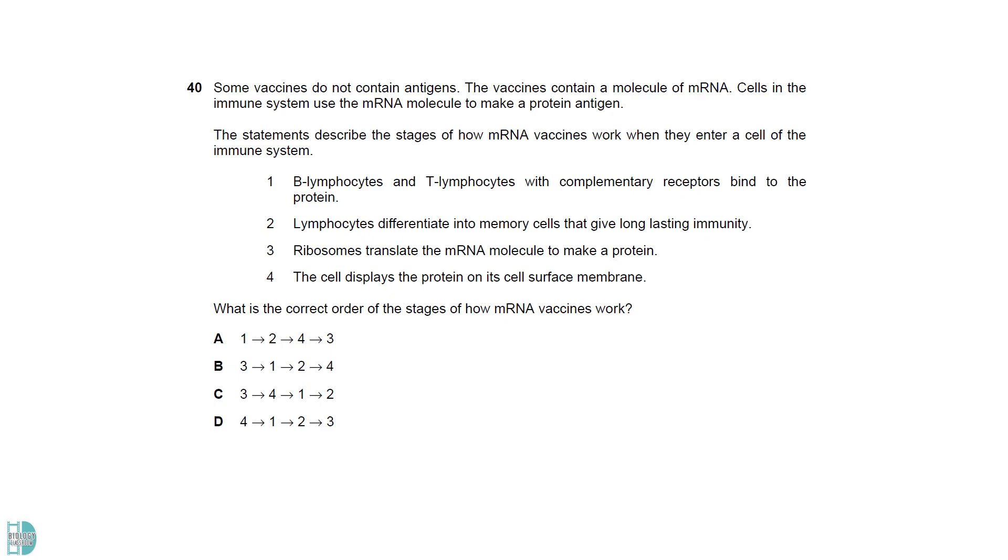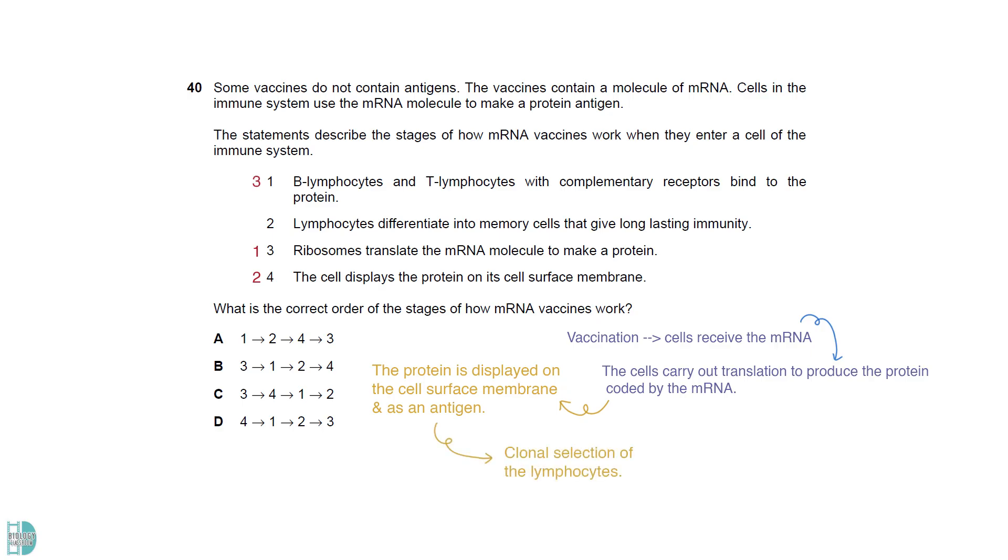Following the vaccination, the cells that receive the mRNA carry out translation to produce the protein coded by it. This protein will be displayed on the cell surface membrane as an antigen. Clonal selection of the lymphocytes will then take place. Some of the lymphocytes differentiate into memory cells and provide immunological memory.